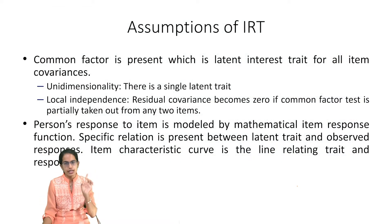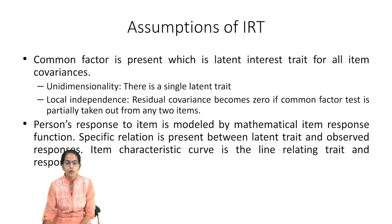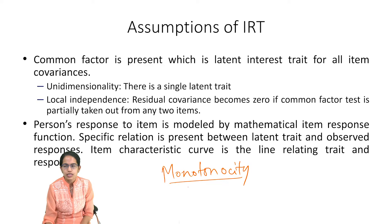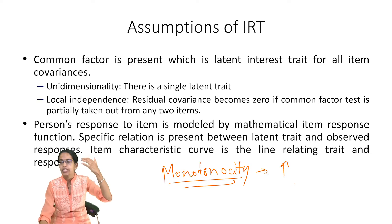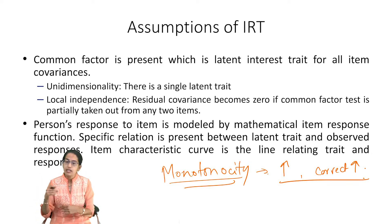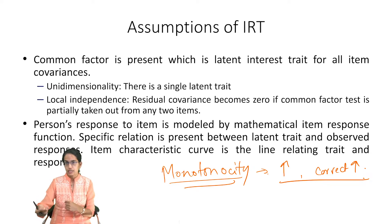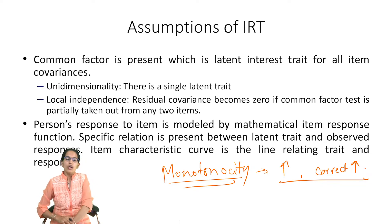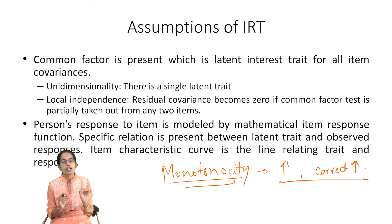What are the assumptions behind IRT? There are four primary assumptions that we take into account. The first is monotonicity. Monotonicity simply means that as the level of the trait increases, the probability of correct responses also increases. That is the first assumption behind item response theory.